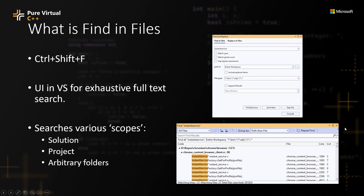As opposed to its much simpler cousin, the Find in Files tool window enables you to do a number of advanced scenarios, such as filtering down files by pattern, by file extension, incrementally adding items to the results list to look at later, doing secondary searches on top of an existing result set, grouping, sorting, or even doing secondary filters.